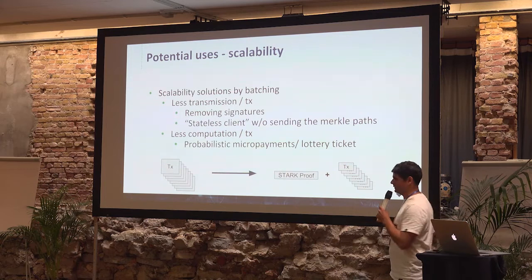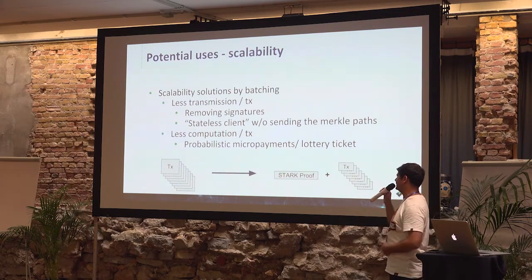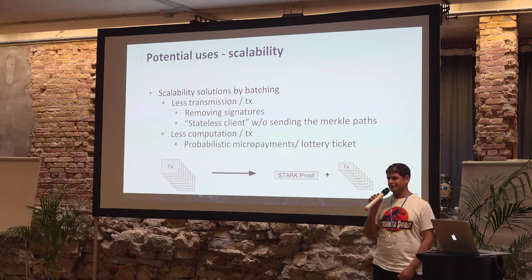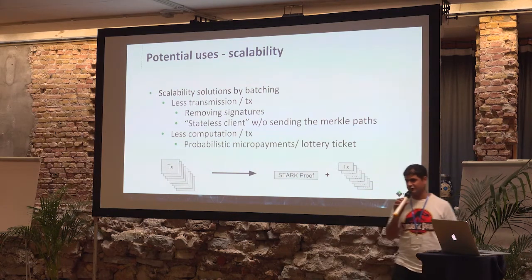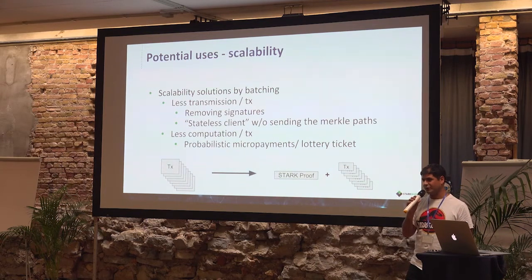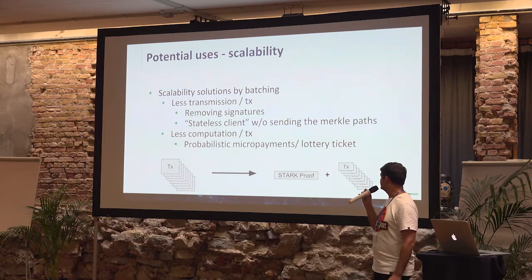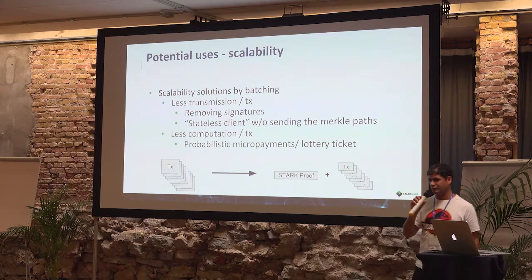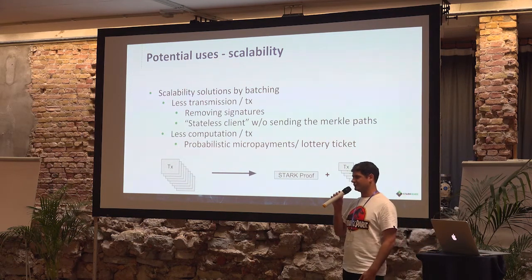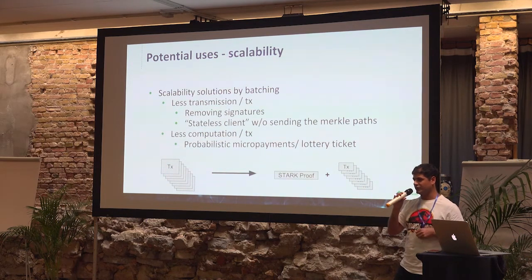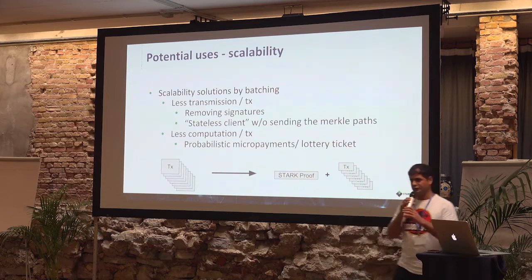Another use case is the stateless client. When you have a payment system, you can either save the balance on-chain or off-chain. If you want to save the balance off-chain, you can keep on-chain just the root of the state of the accounts. Then 1,000 people want to send transactions — they are sending transactions with signatures, and they are also sending a Merkle path that shows that they do have the value they are claiming to have in their accounts.